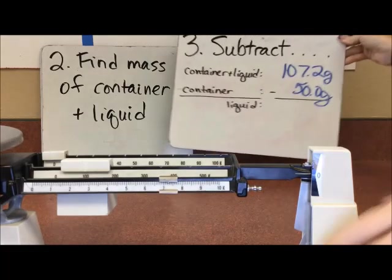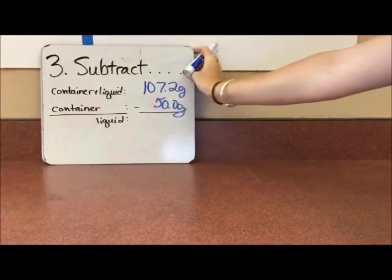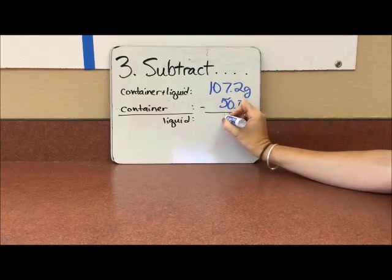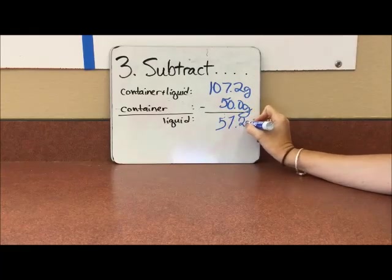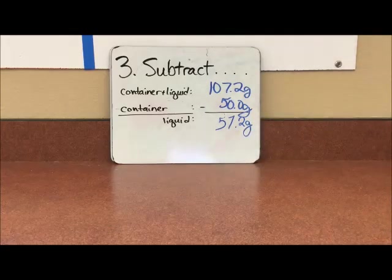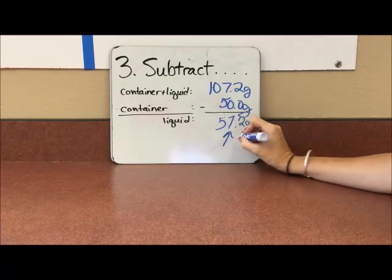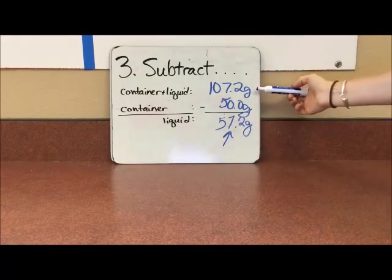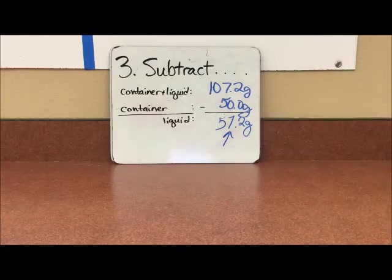Minus 50.0 grams. And we're going to do some subtraction here. So we're going to get 57.2 grams. And that is what we would record on our data table is this measurement. Because to record this measurement would be inaccurate. This is the container and the liquid. We just want the mass of the liquid.